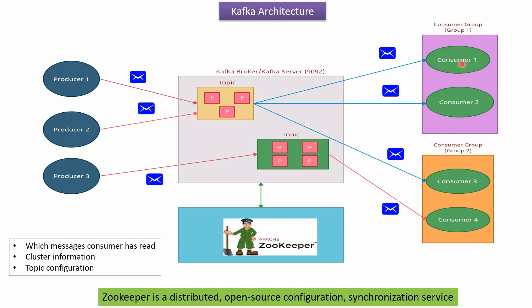Consumer 1, consumer 2, and consumer 3 are consuming messages from this topic, and consumer 4 is consuming messages from this topic. One important point is that each and every consumer has to be associated with a particular consumer group.